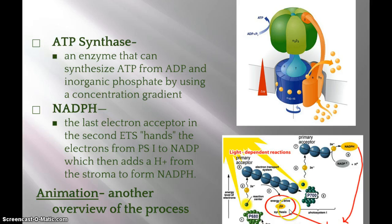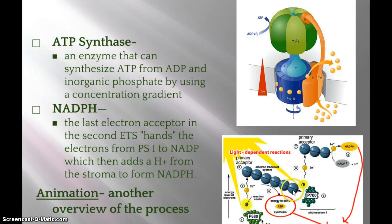Here's the classic diagram of the light-dependent reaction: photosystem 2 gets energy from a photon, exciting two electrons up to the electron transport chain. Meanwhile, photosystem P680 needs more electrons, so it steals them from water — the electrons replenish, oxygen gas is broken off, and hydrogen ions accumulate in the lumen. The electrons bounce along, sometimes pulling in hydrogen ions, and then end up at photosystem 1.